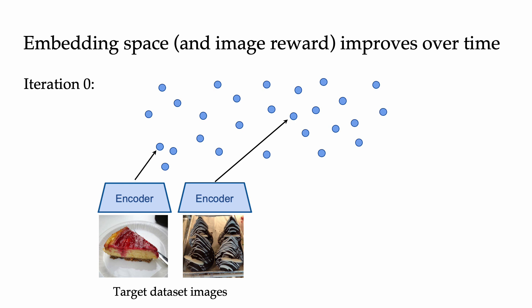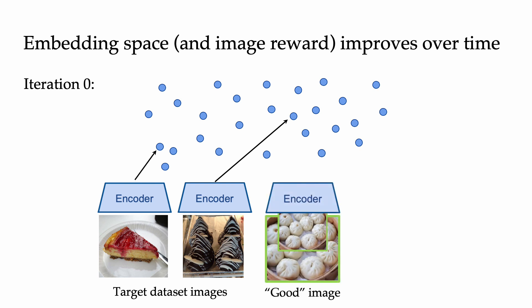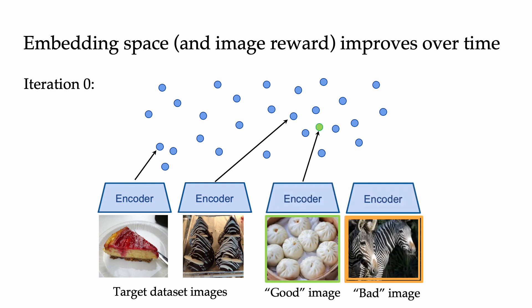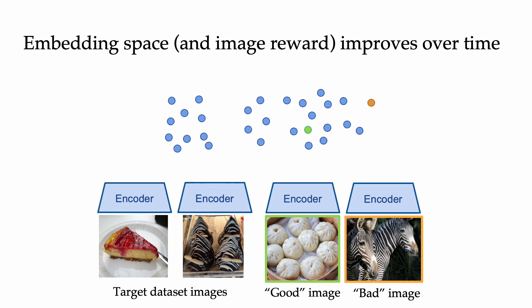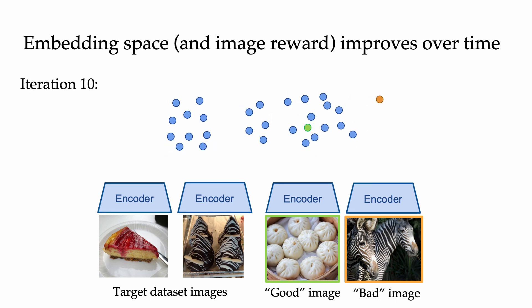This means that our image reward, which we use to determine which images are helpful, isn't very good at distinguishing good images from bad images. However, as we train longer, our representations become more structured. Now, using the updated representation space, our image relevance reward is more capable of identifying useful and relevant data, and we can prioritize finding more of that in later iterations.